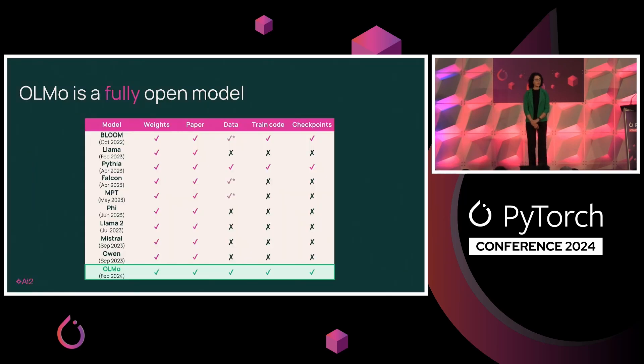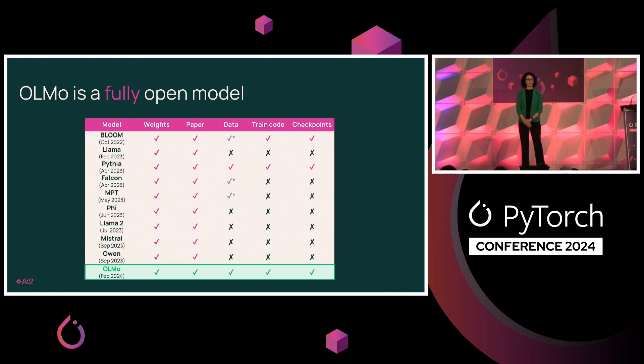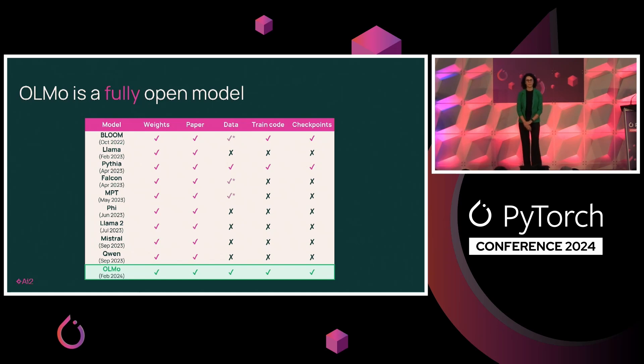OLMo is a fully open model. We have the open weights, the technical reports, all the data, training recipes, and checkpoints.